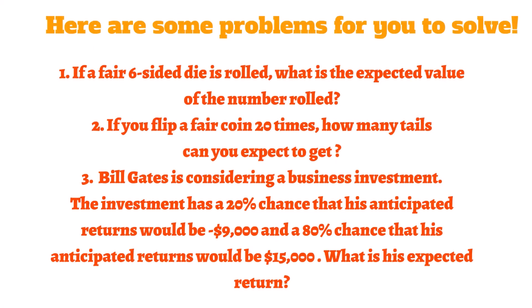Here are some problems for you to solve on your own. Remember, to enter the giveaway, you just need to write the answer to one of the problems in the comments below. Number 1: If a fair six-sided die is rolled, what is the expected value of the number rolled? Number 2: If you flip a fair coin 20 times, how many tails can you expect to get? Number 3: Bill Gates is considering a business investment. The investment has a 20% chance that his anticipated return would be -$9,000, and an 80% chance that his anticipated return would be $15,000. What is his expected return?